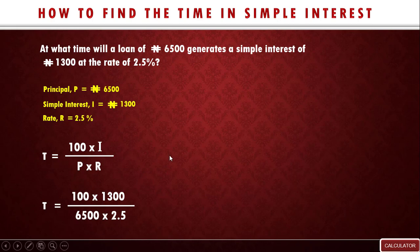So you can see we're fixing the values. Our I, which is the simple interest, is 1300 and fixed into the formula right there. And then our principal 6500 we fix it into this formula, we have it here, and the rate is 2.5 we fix it into the formula, we have it here.